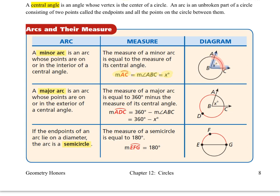Then we have something called a major arc, which is an arc whose points are on or in the exterior of a central angle. We have angle ABC encompassing arc AC, and the major arc is around the outside — the rest of the circle. Consequently, the measure of arc ADC, because it starts at A, goes through point D, and then ends at point C, is equal to 360 degrees minus the measure of arc AC.